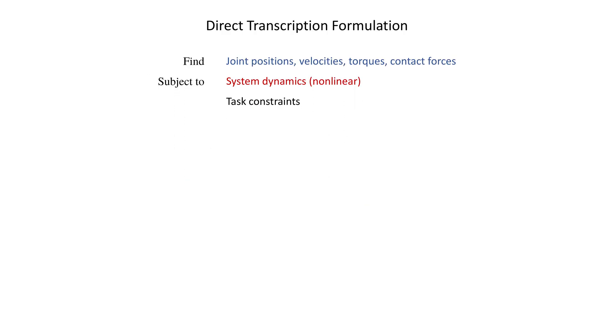In summary, direct transcription takes the state of the robot and the control inputs as decision variables and tries to find a trajectory that satisfies the system dynamics as well as any other task-related constraints.